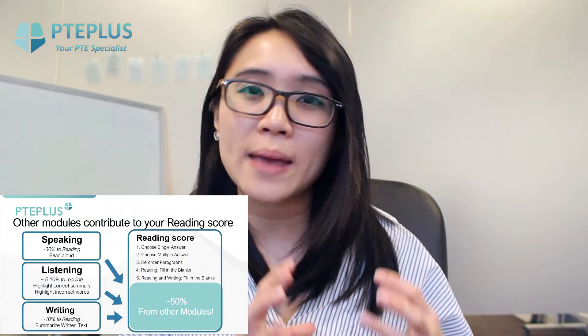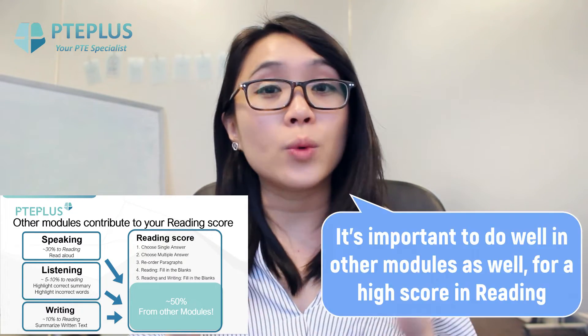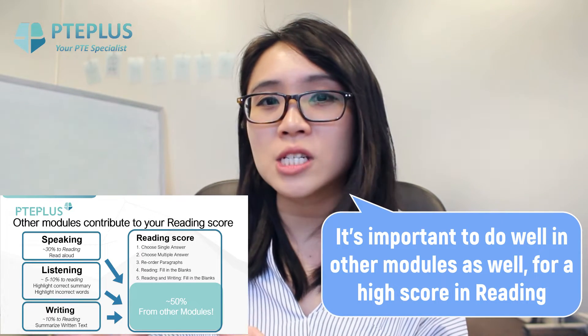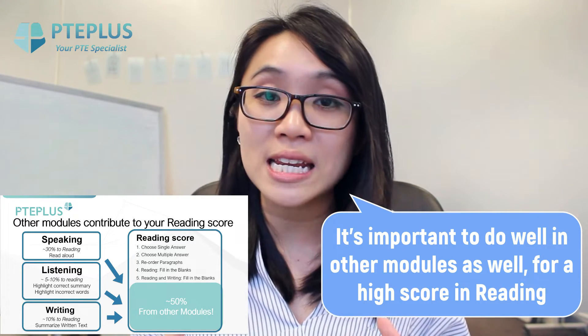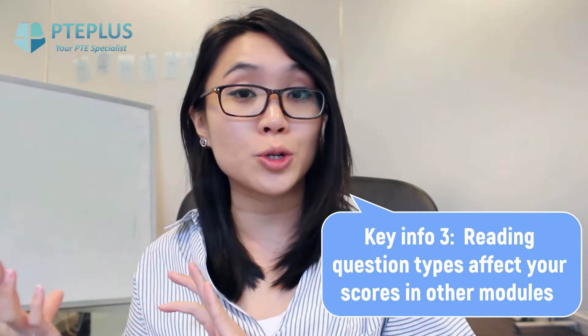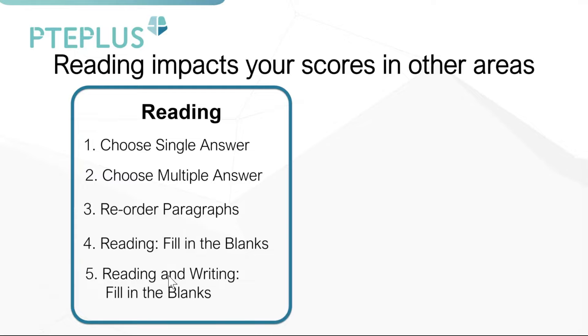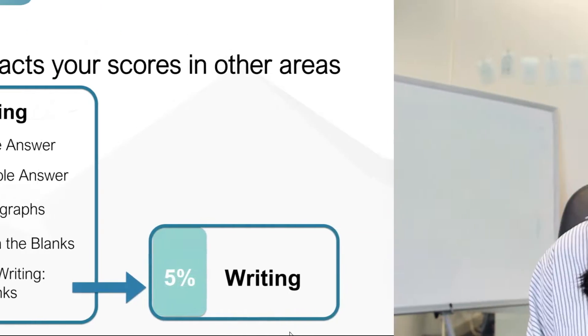This highlights that to achieve your target score in PTE reading, you not only have to prepare for the reading question types but also need to do well in some question types in other modules, as they contribute quite significantly — about 50% — to your reading score. Also keep in mind that your reading question types, specifically reading and writing fill in the blanks, contribute a small percentage to your writing score as well.